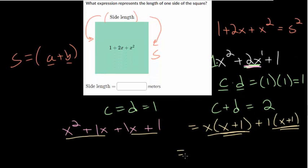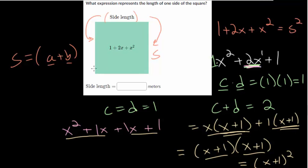So from here, we can factor out x + 1 from each. So you get x + 1 factored out. Here we're left with an x and here we're left with + 1. And this is what we expected. We got the same expression twice. We have a perfect square. We can rewrite this as (x + 1)². But when we go back to our answer, they're just asking for one of the side lengths. So one side length is just this x + 1.